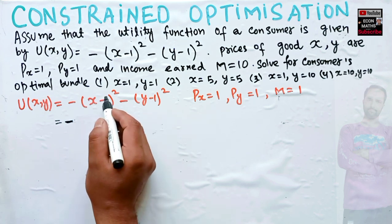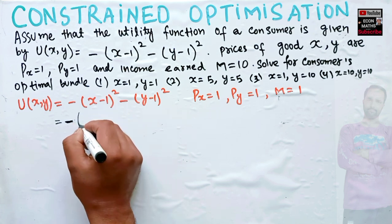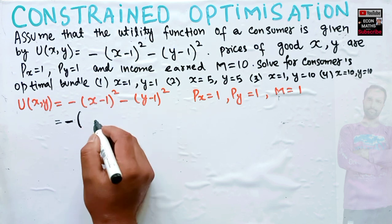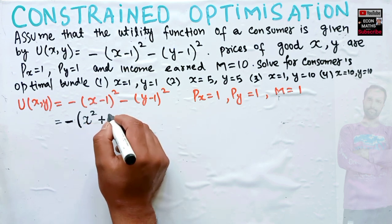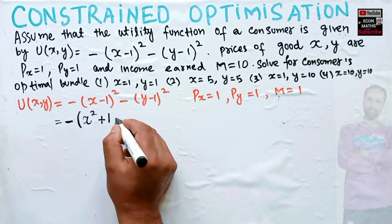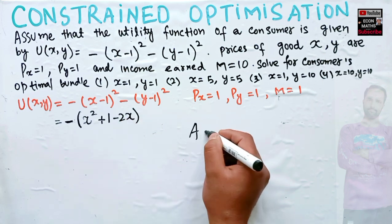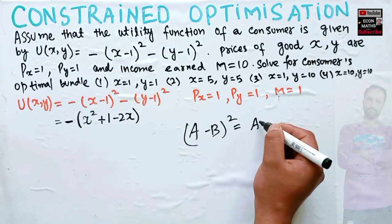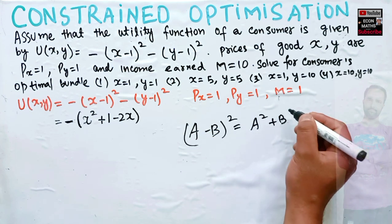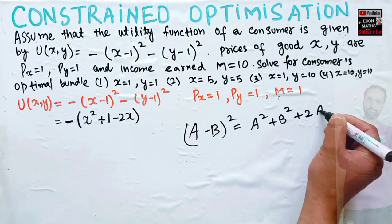Let us expand (x minus 1) squared. What is (x minus 1) squared? It is simply x squared plus 1 squared minus 2x. The formula is: (a minus b) squared = a squared plus b squared minus 2ab.